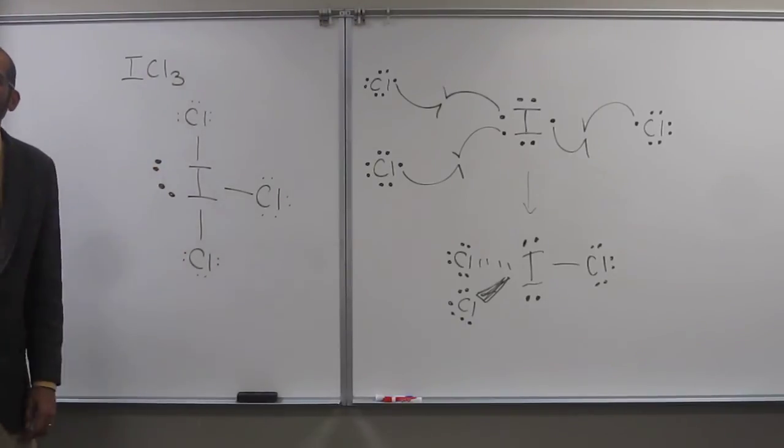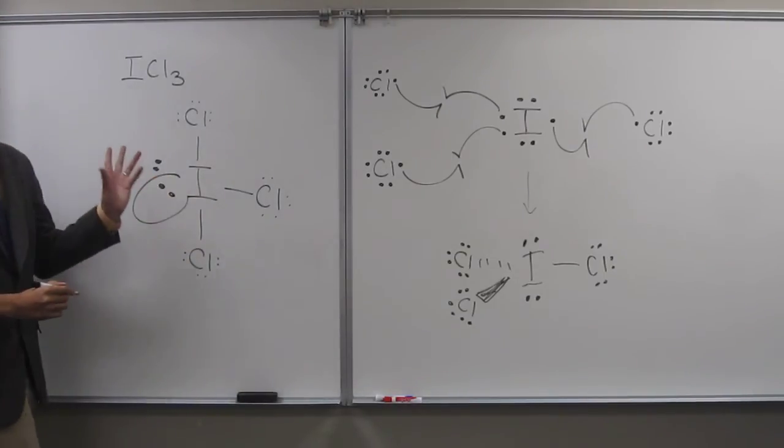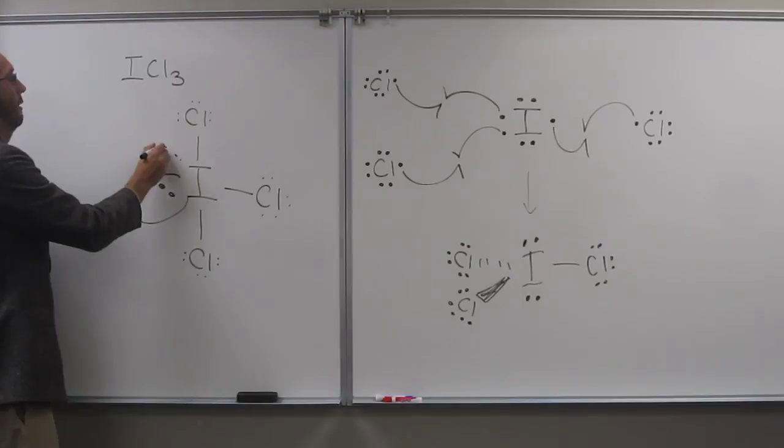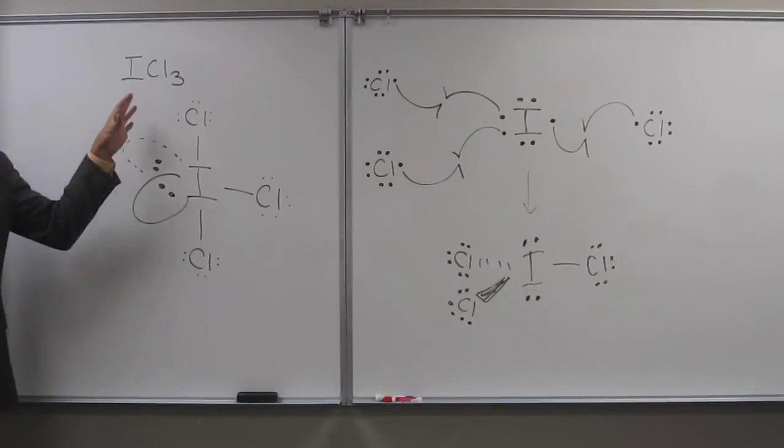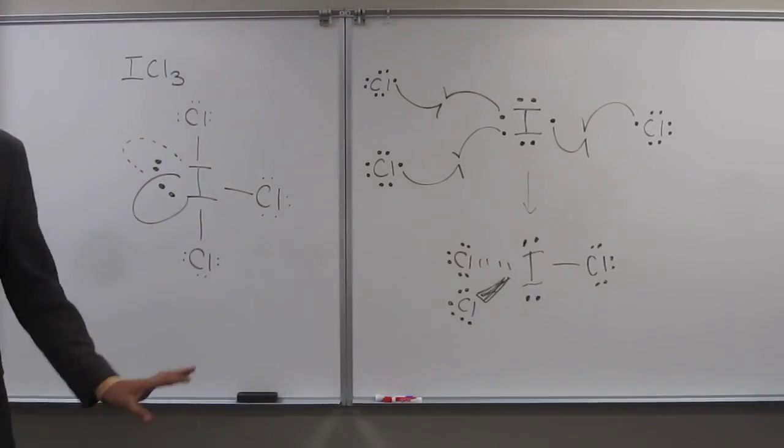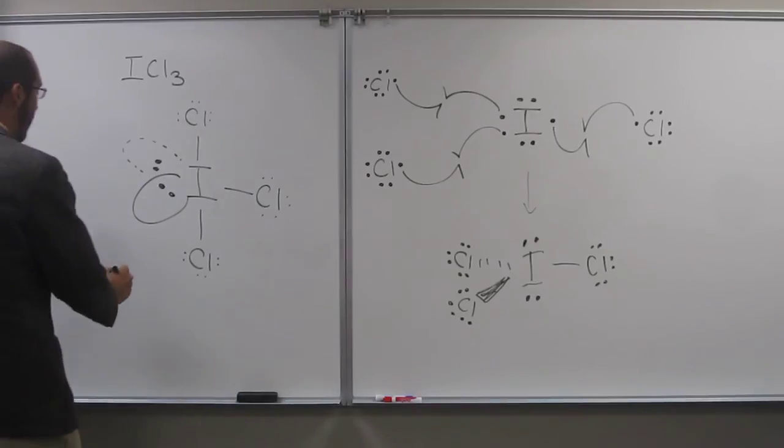But it kind of looks weird, if that makes sense. So this lone pair is coming out towards us, and that one's back away. Does that make sense? Okay, so we call this T-shaped.